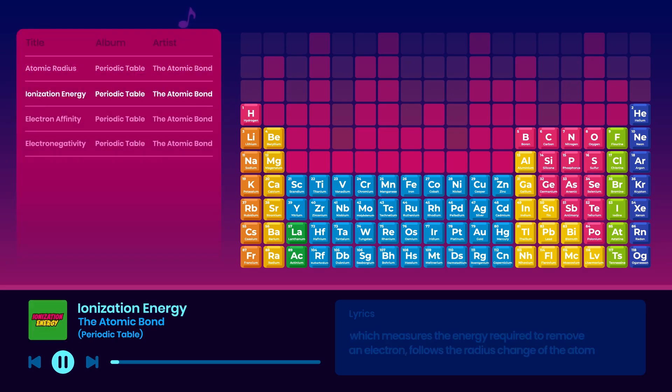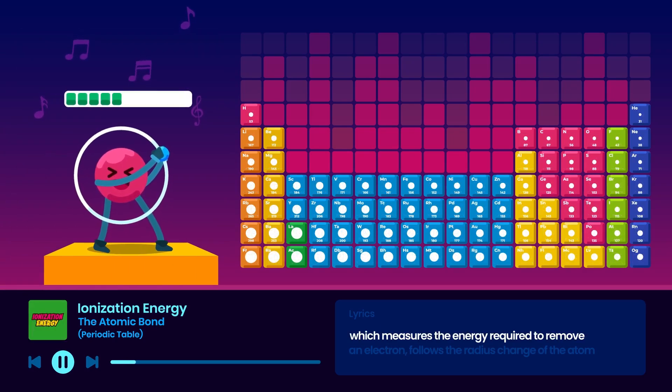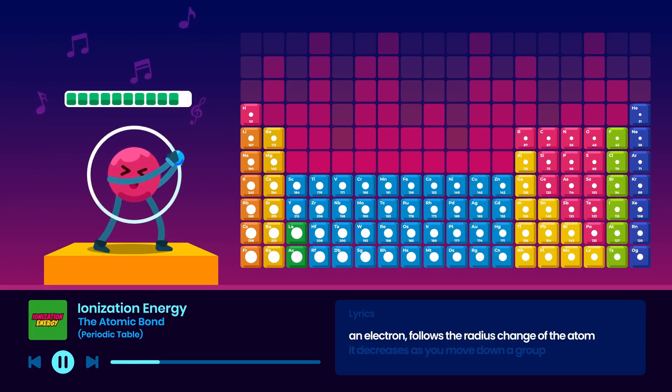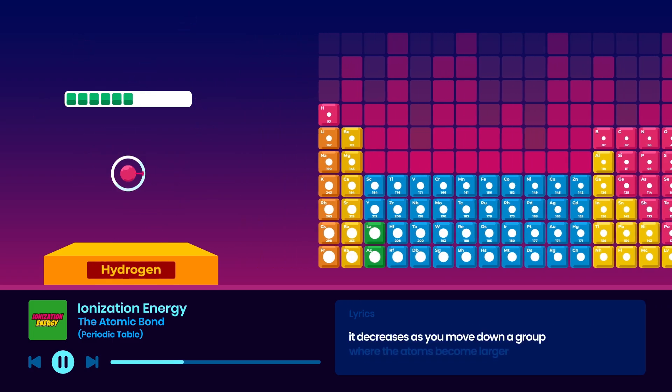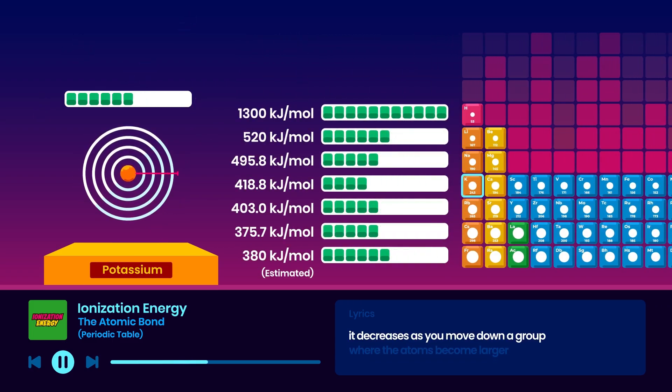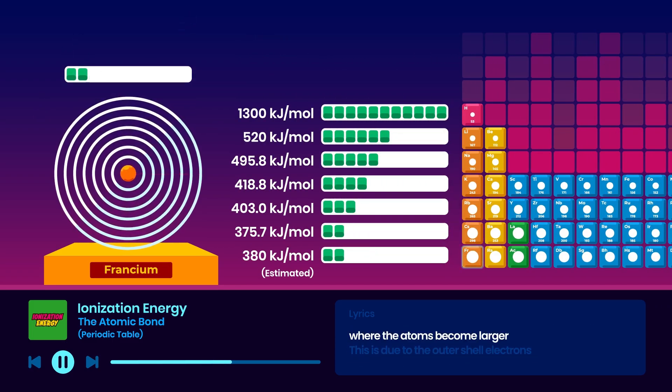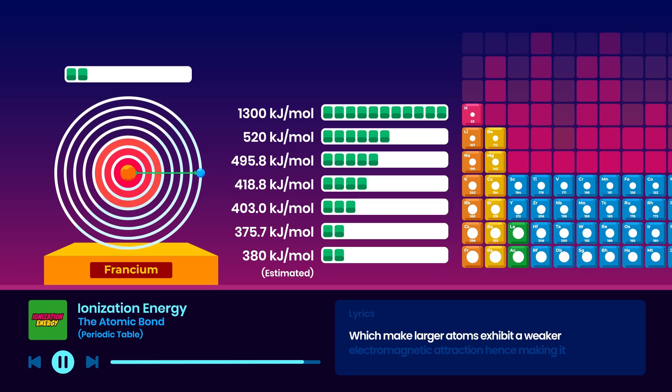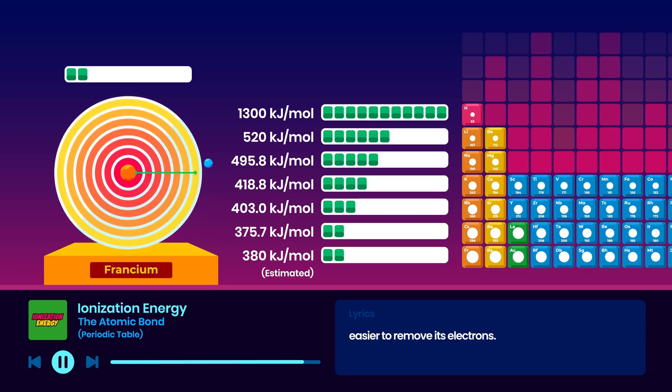As a result, ionization energy, which measures the energy required to remove an electron, follows the radius change of the atom. It decreases as you move down a group where the atoms become larger. This is due to the outer shell electrons becoming further away from the positively charged protons of the nucleus, which make larger atoms exhibit a weaker electromagnetic attraction, hence making it easier to remove its electrons.